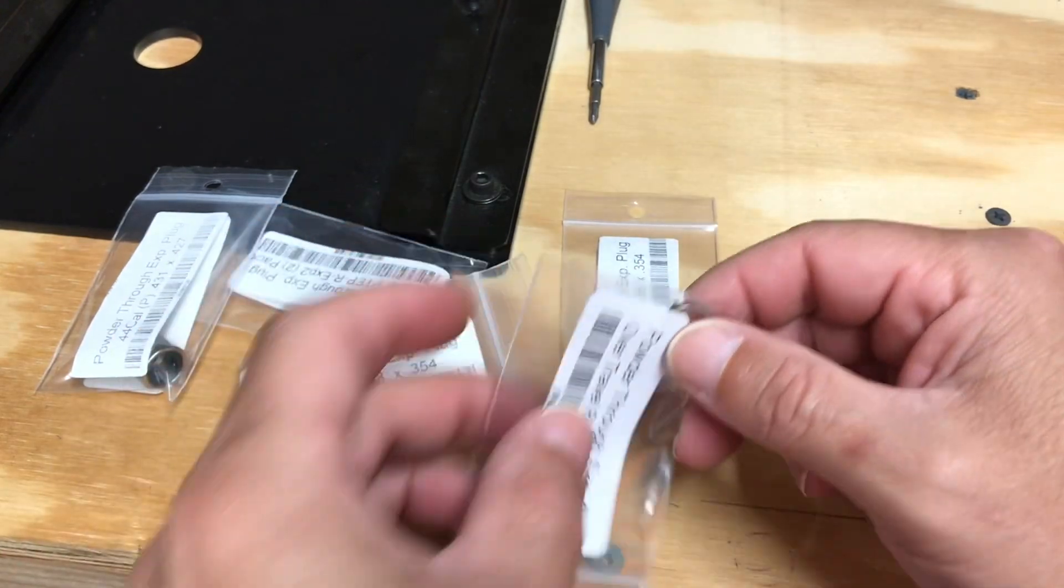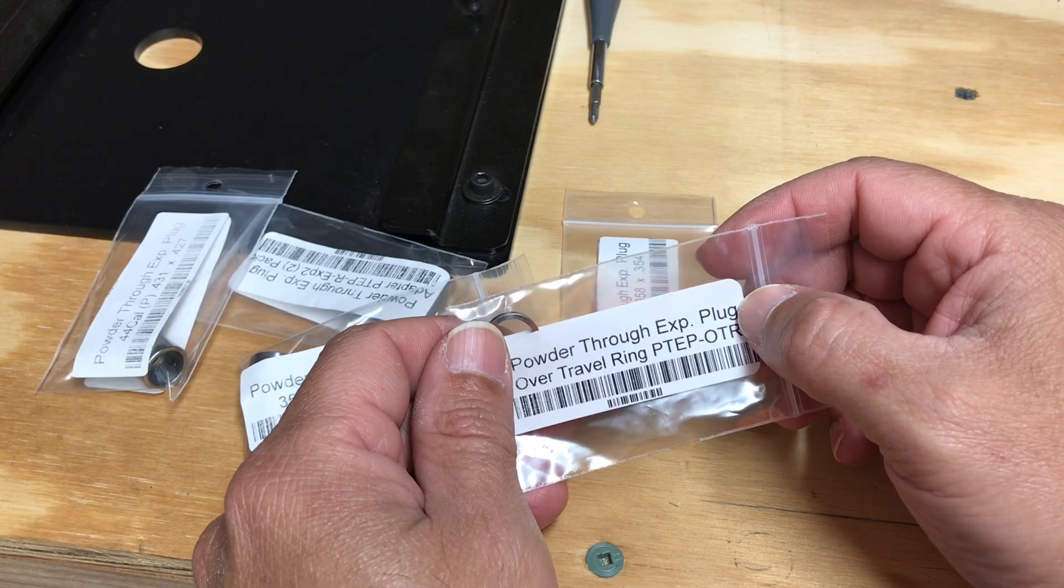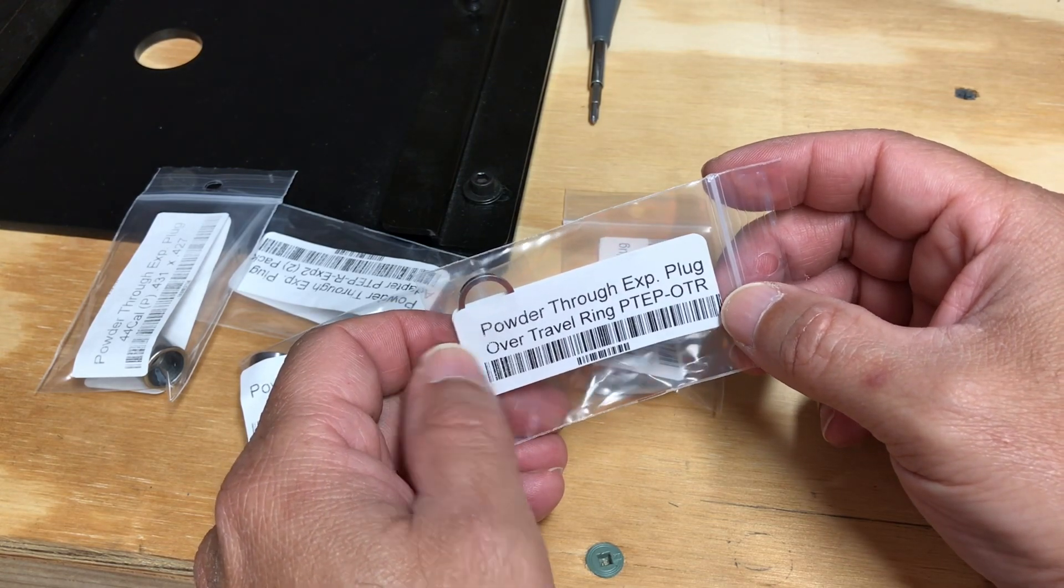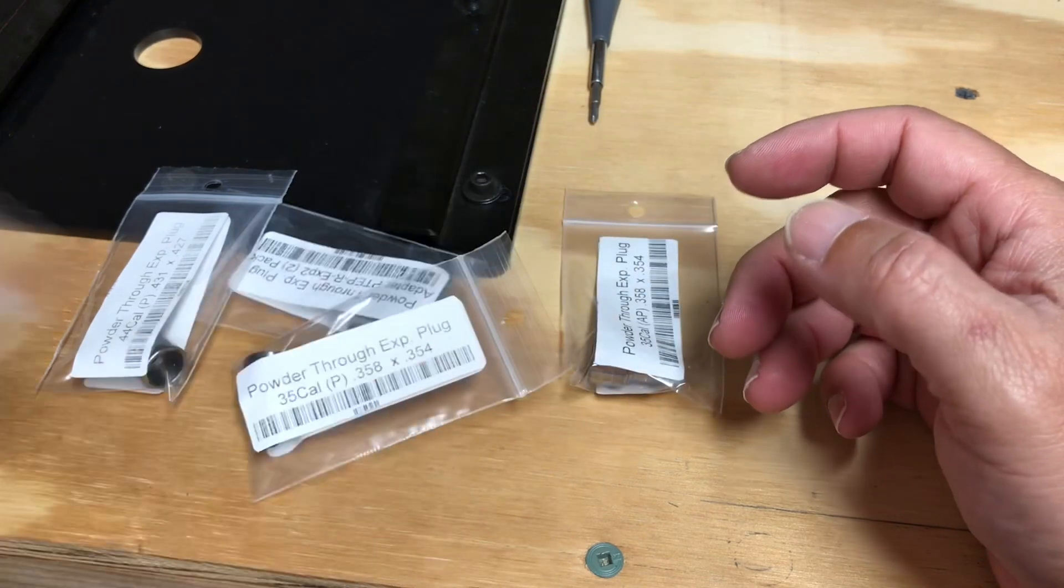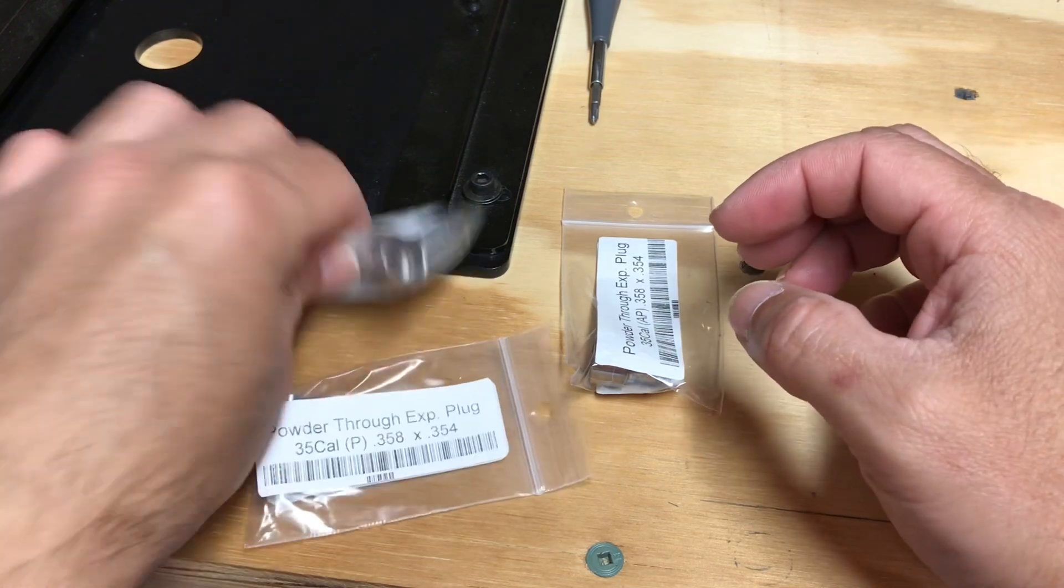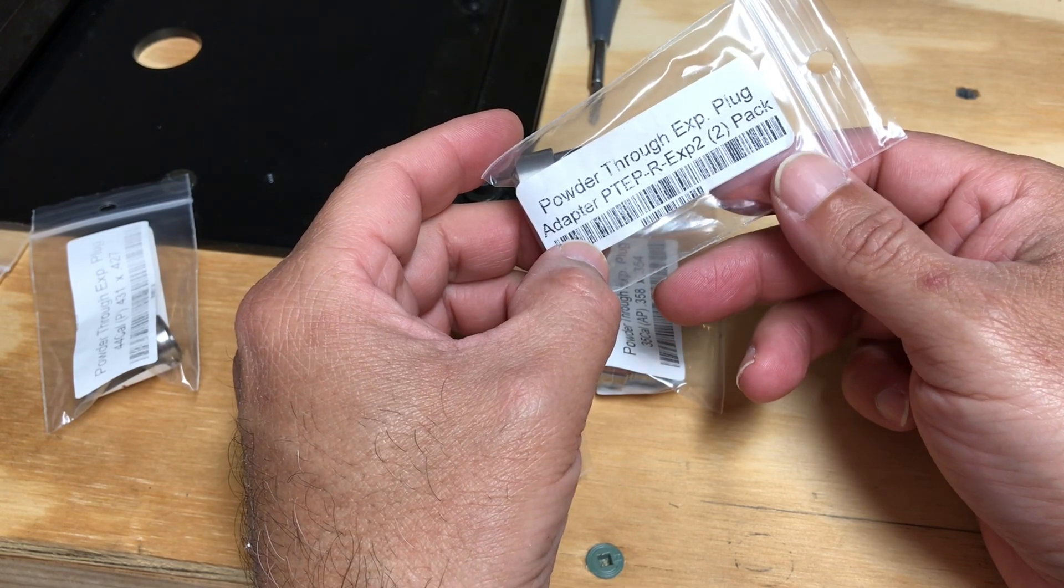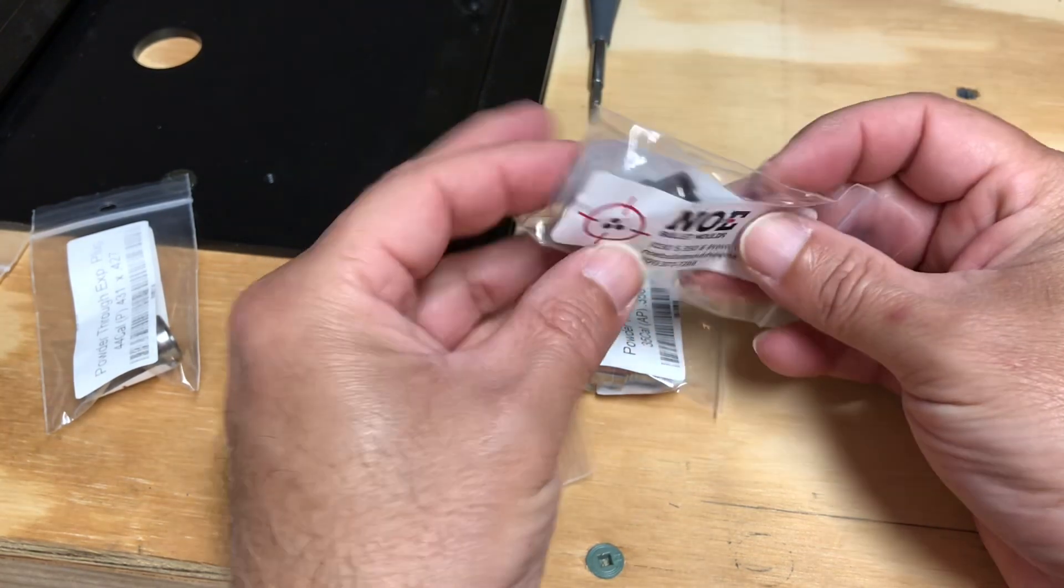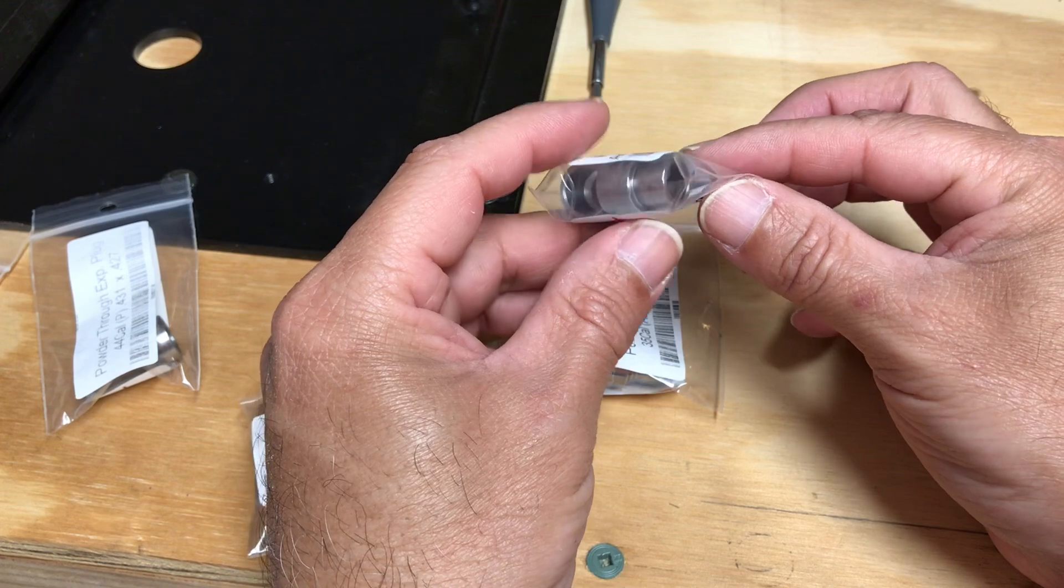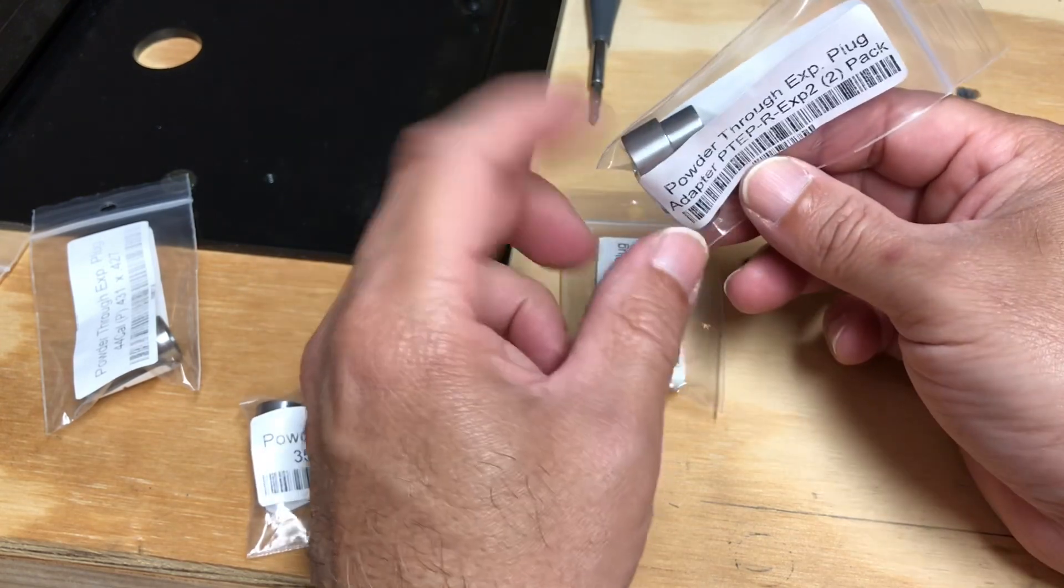Would I buy these again? No. These are designed to work with Lee powder through dies. I don't see much help with the overtravel ring. These are called powder through expansion adapters. Because of the tool pack, it does help to pick up the slack. If he would have made these plugs longer, this would not be needed.